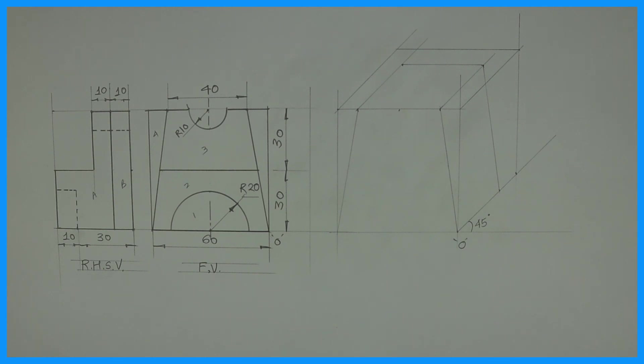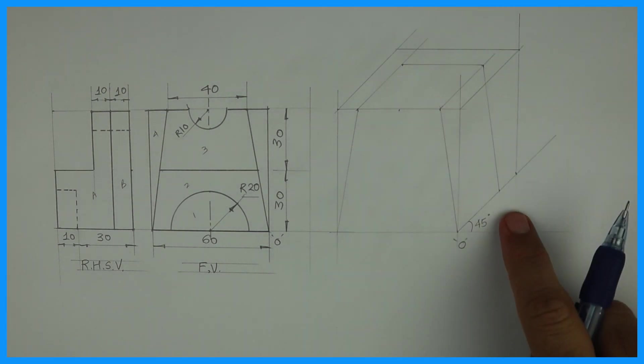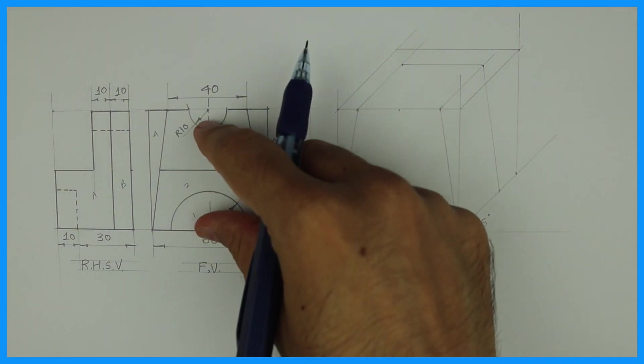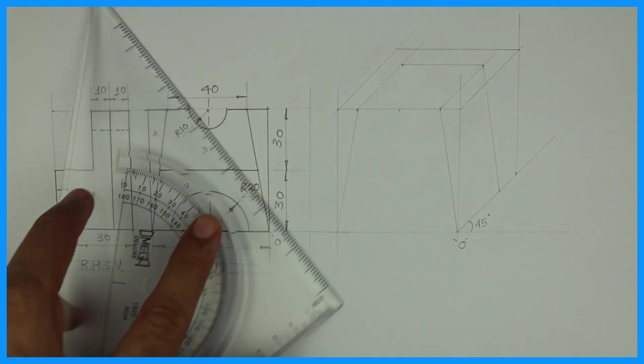Now what we need to do, see the height. If you see in front view, see the slope is done, right? If you see this height, how much it is, 30.